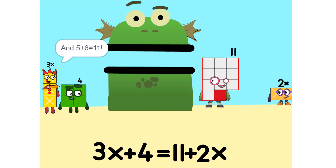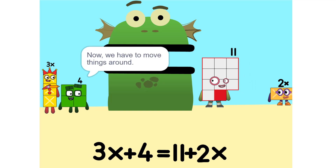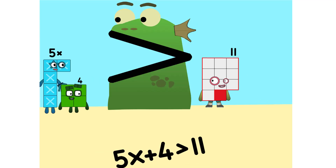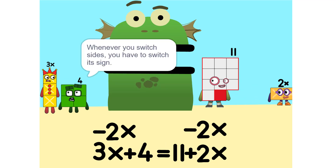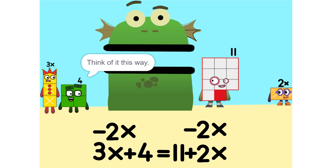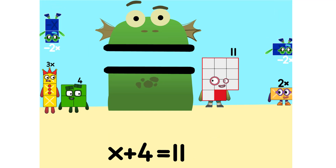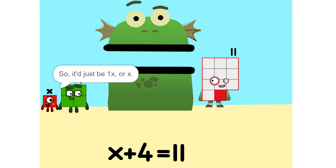And 5 plus 6 is 11. Yeah. Now we have to move things around. We have to move this 2X to this side. So, 5X. Whenever you switch sides, you have to switch its sign. So if it's positive, it becomes negative and vice versa. Why? Think of it this way — you're subtracting 2X from each side. So it'd just be 1X or X.